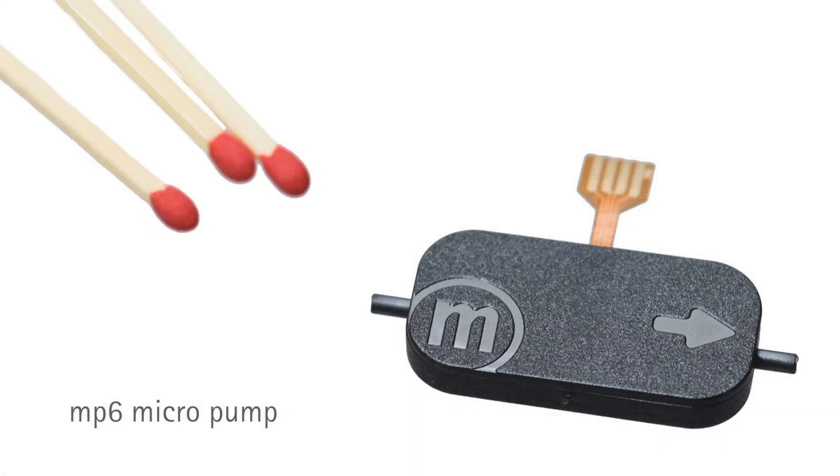Concentrating on the MP6 micropump, its characteristic performance curve shows a maximum flow rate of 7,000 microliters per minute at no back pressure and 600 millibar maximum pressure at no flow rate.